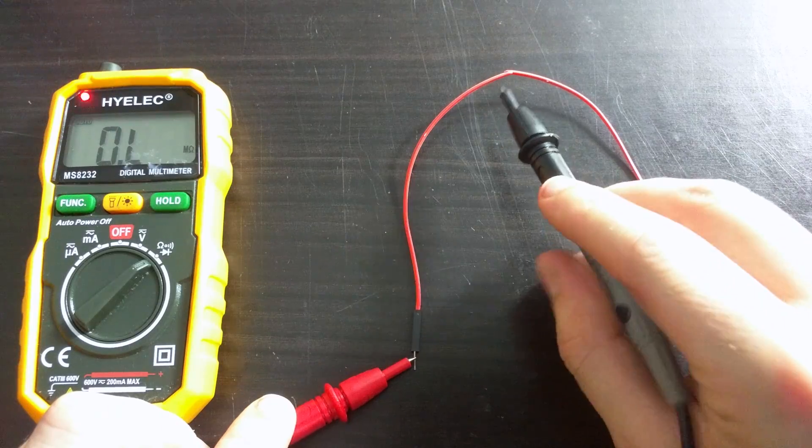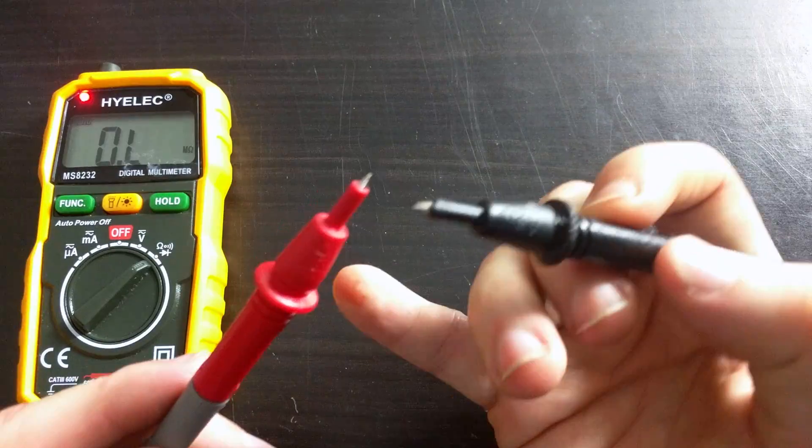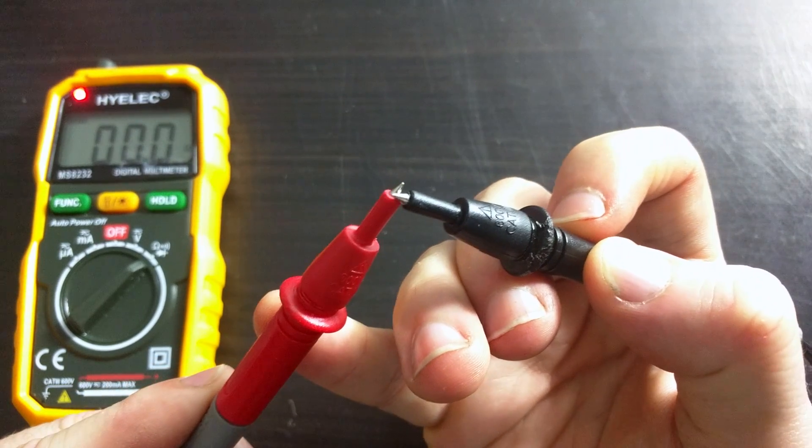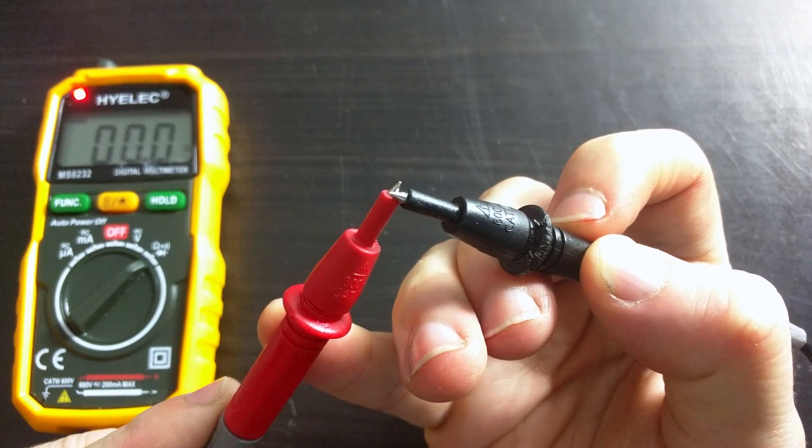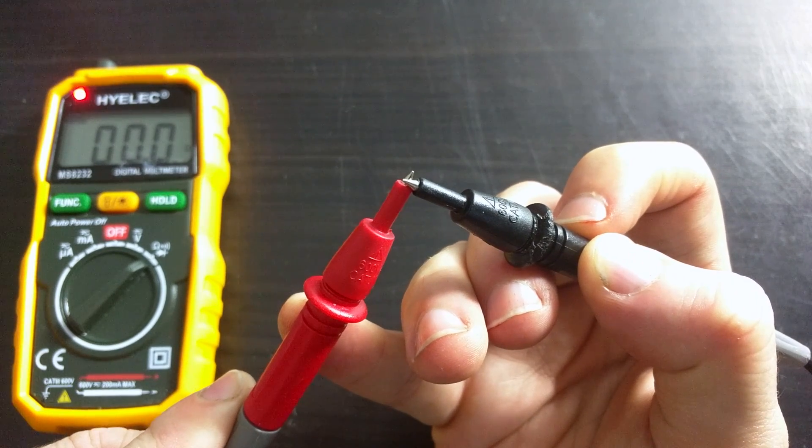There's no continuity, so we might as well throw this wire in the bin. You can see that if I actually connect the two probes together, the multimeter is showing zeros all around, meaning there is an excellent connection between these two probes.